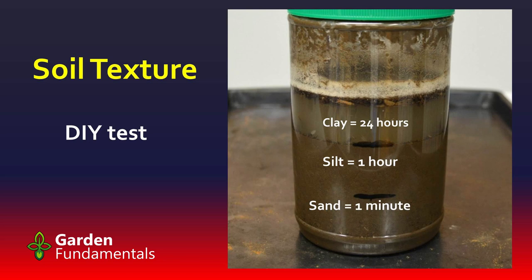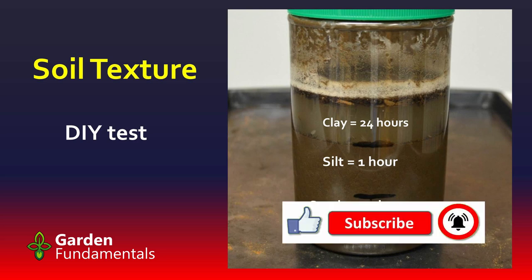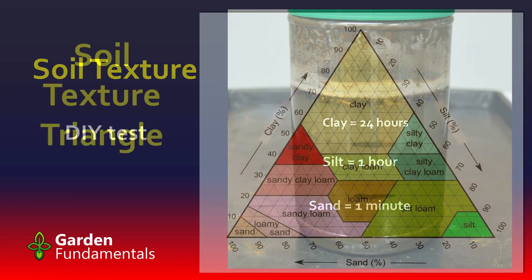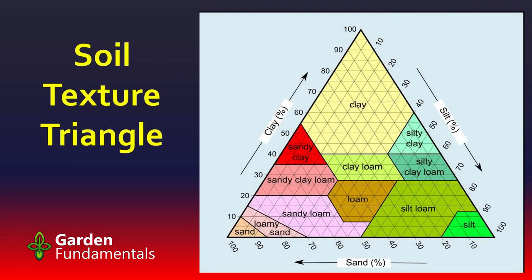There's another way — a pretty simple test you can do at home. Take some soil, add some water, put it in a jar, mix it up really well, and then set it down. After a minute, draw a line — that's the amount of sand you have. Sand is heavy and big; it settles very quickly. Then let it set for an hour and the silt settles out — draw another line. Then you have to wait 24 hours for those small clay particles to settle out, and draw another line. Those lines represent how much of each you have.